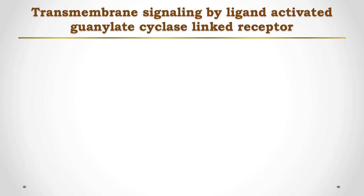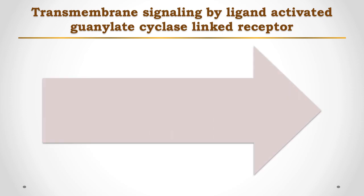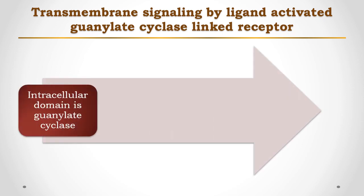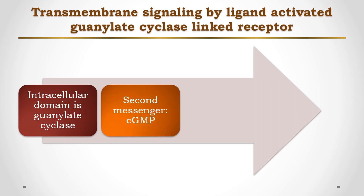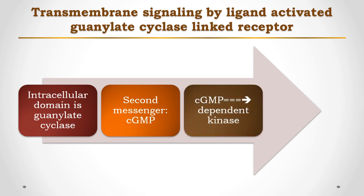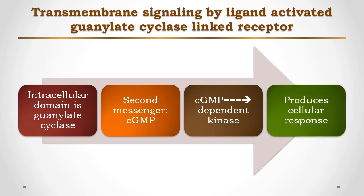In some receptors, like the hormone receptor for atrial natriuretic peptide, there is a similar architecture, but the intracellular domain is not a tyrosine kinase — it is replaced by guanylyl cyclase. After synthesizing the second messenger cyclic GMP, it provides a dependent kinase activity responsible for producing the cellular responses.